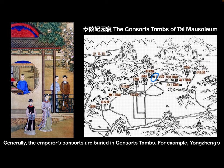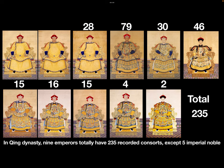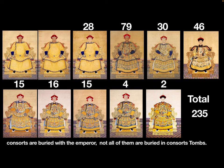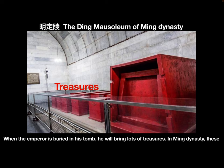Generally, the emperor's consorts are buried in consort's tombs. For example, Yongzheng's consorts are buried in Tai Lin Fei Yuan Qin, the consort's tombs of Tai Lin. In the Qing dynasty, nine emperors had a total of 235 recorded consorts, except five imperial noble consorts who were buried with the emperor. However, not all consorts are buried in consort's tombs. For example, Kangxi had 79 recorded consorts, but only 48 are buried in Jing Lin's consort's tombs.